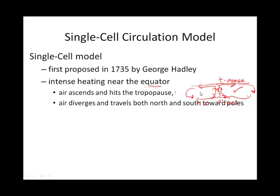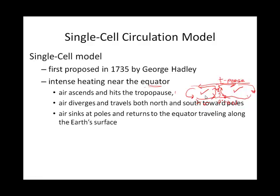So here's one cell in the northern hemisphere, here's one cell in the southern hemisphere. Okay, so the air sinks at the poles and returns to the equator, traveling along the Earth's surface.